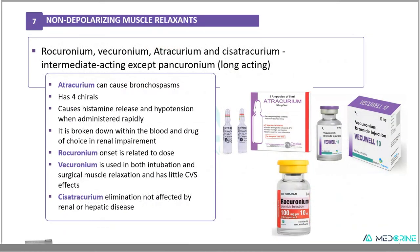In non-depolarizing muscle relaxants, we have rocuronium, vecuronium, atracurium, and cisatracurium, which are intermediate-acting non-depolarizing muscle relaxants. One of the long-acting non-depolarizing muscle relaxants is pancuronium. Atracurium can cause bronchospasm and causes histamine release and hypotension when administered rapidly. It is broken down within the blood and is a drug of choice in renal impairment. Rocuronium's onset of action is related to its dose, and vecuronium is used both for intubation and surgical muscle relaxation, with little cardiovascular effects. Cisatracurium elimination is not affected by renal or hepatic disease, and therefore can be used in patients with hepatic or renal insufficiency.